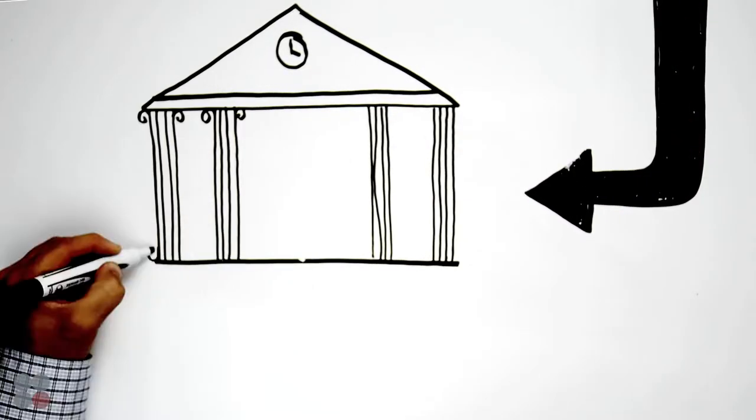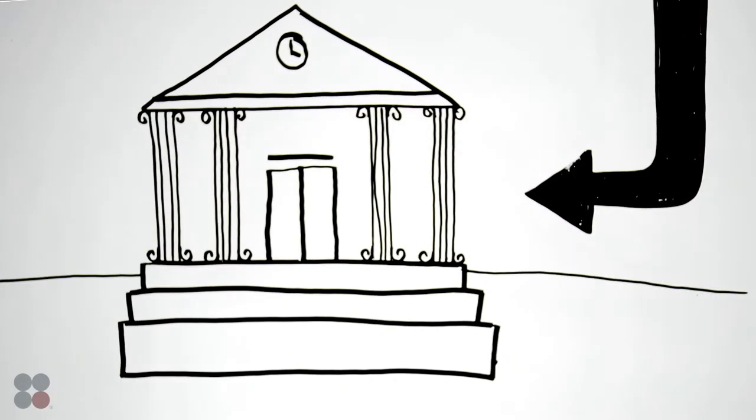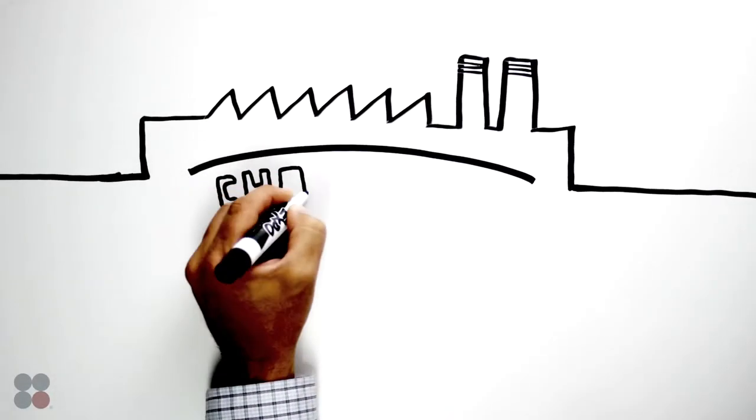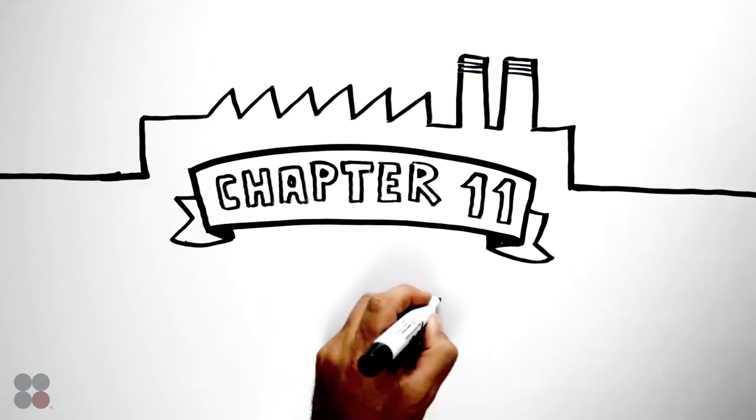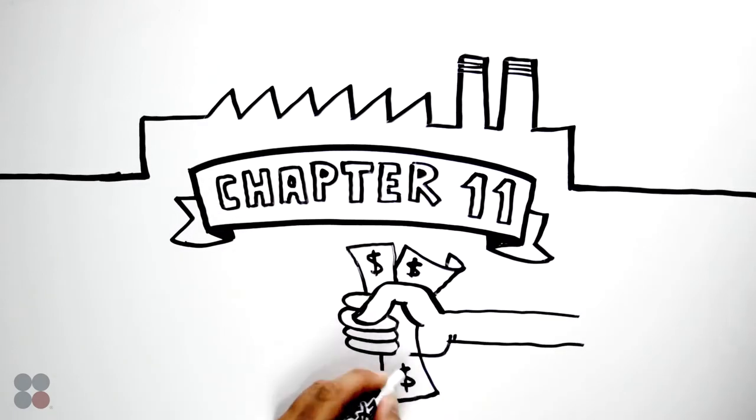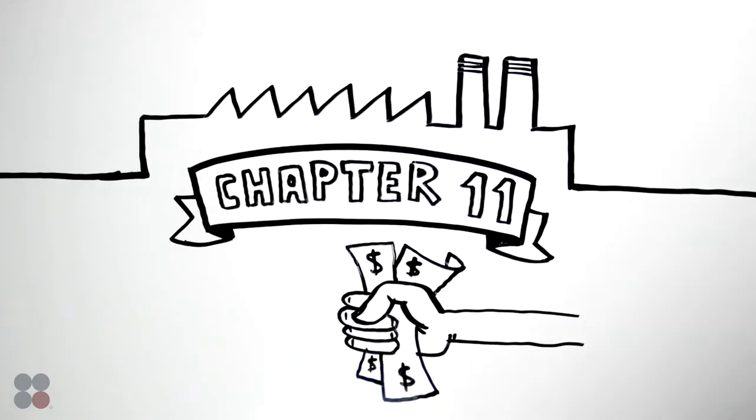And that's why the law allows victims to seek compensation from those companies. To stop asbestos victims from filing lawsuits and to protect their ill-gotten profits, many companies chose to file bankruptcy. But the courts held strong.